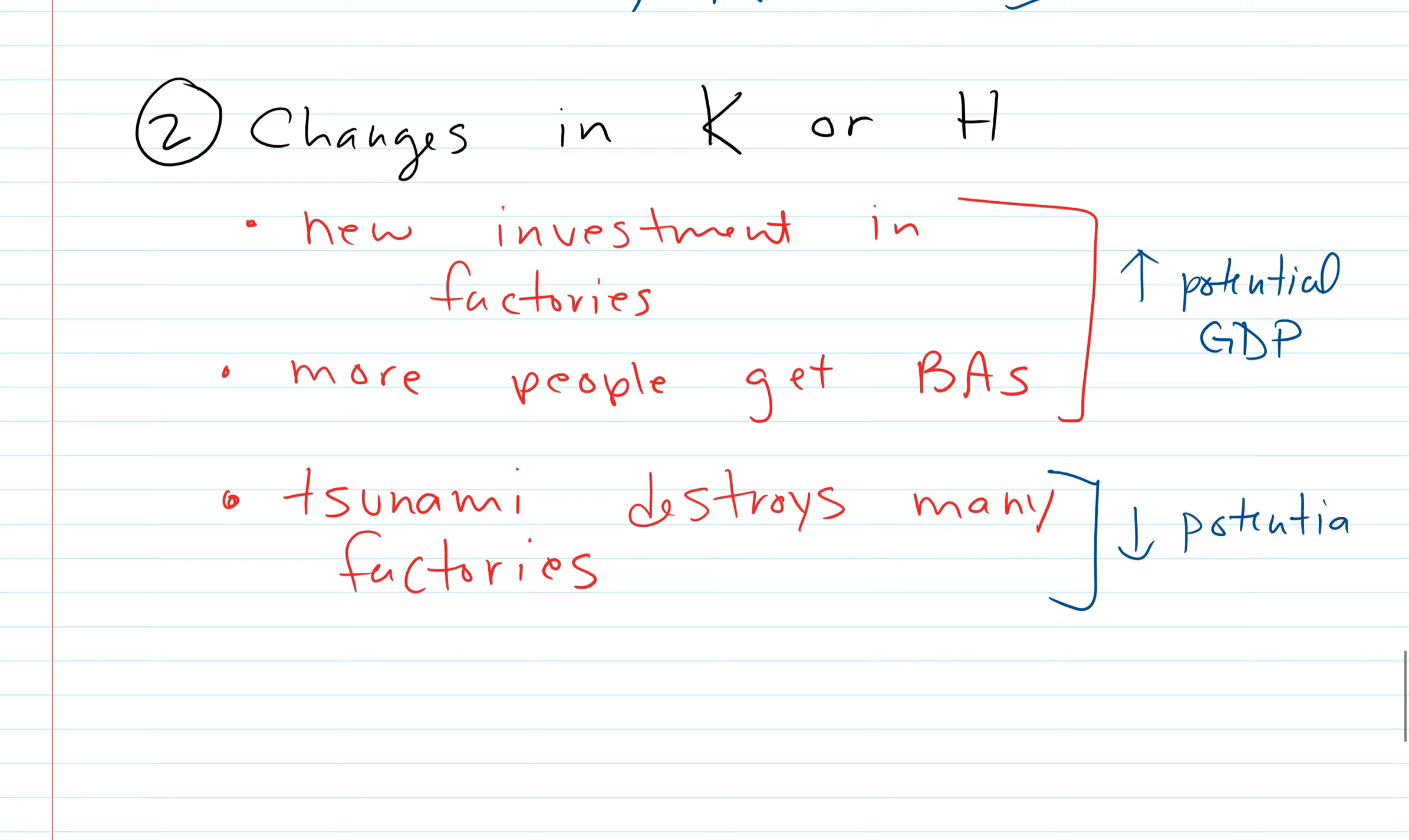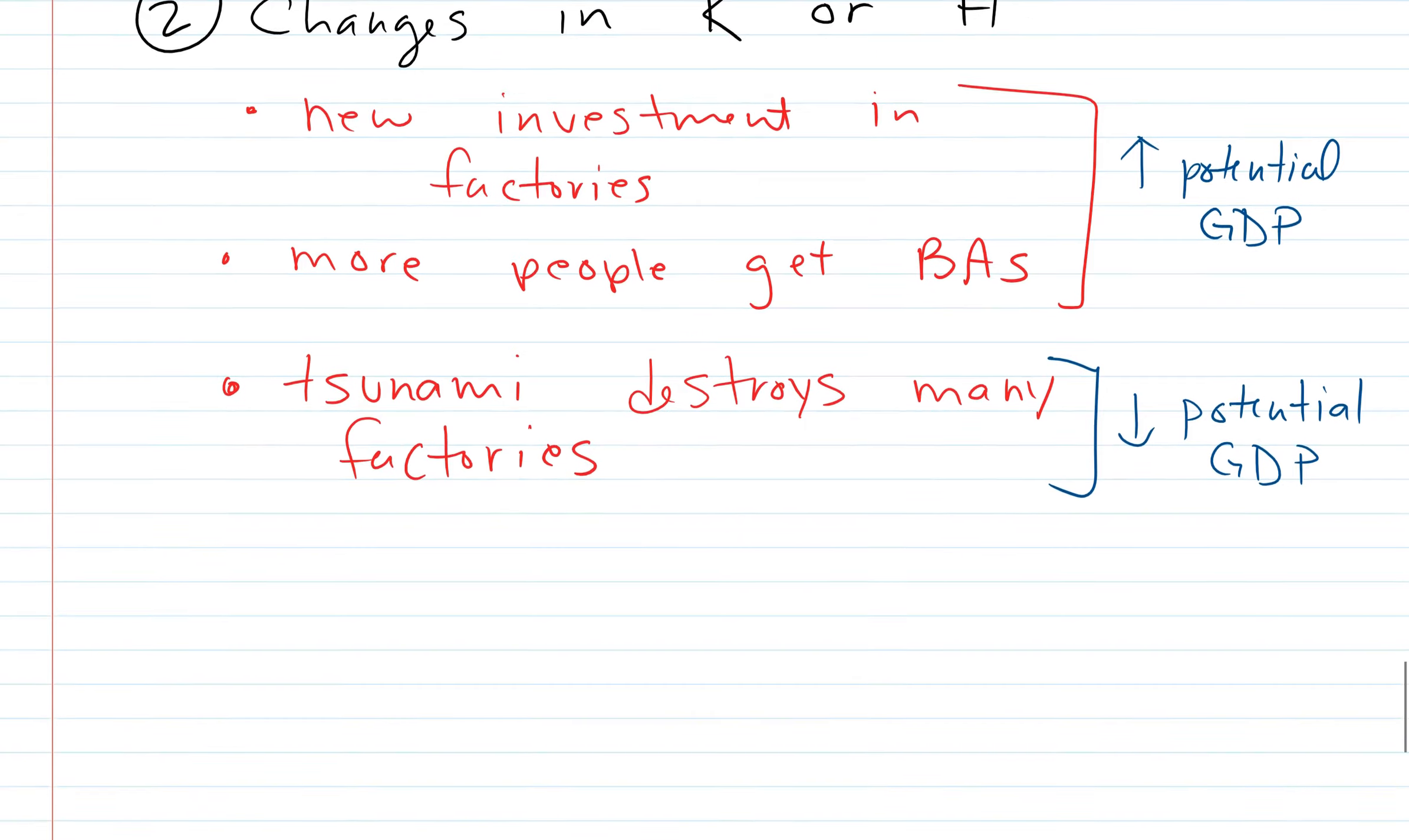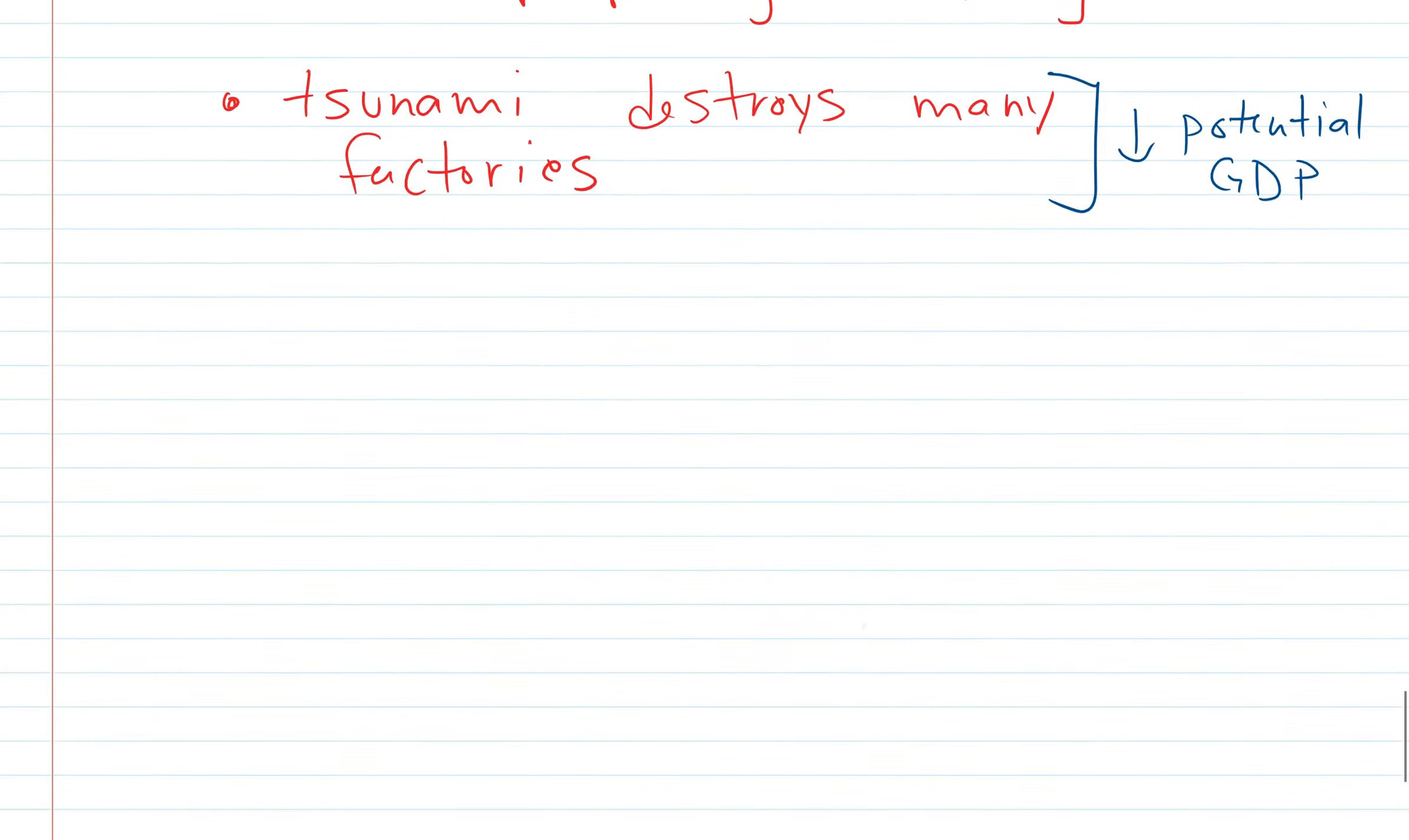It's got to be something major to have effect at this level. So then this would lower potential GDP a little. Remember, there's lots of things happening at the same time. So it's possible this is lowering potential GDP, but something else is pushing it back up. So that's capital and human capital. The third one, we'll look at changes in N, the natural resources.